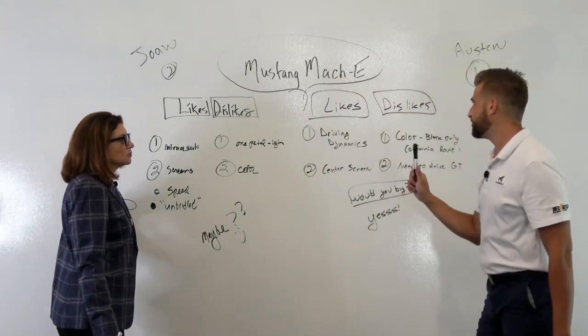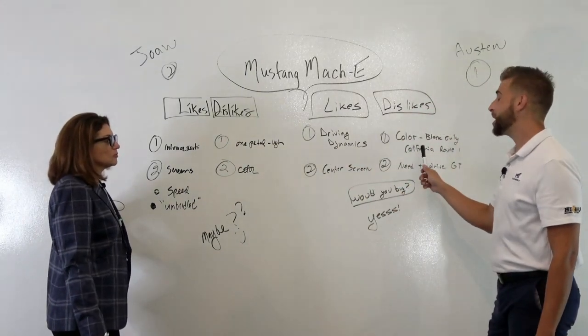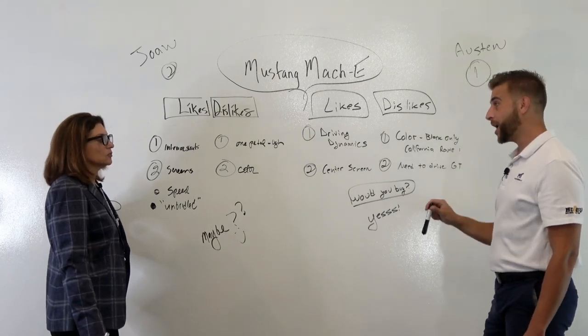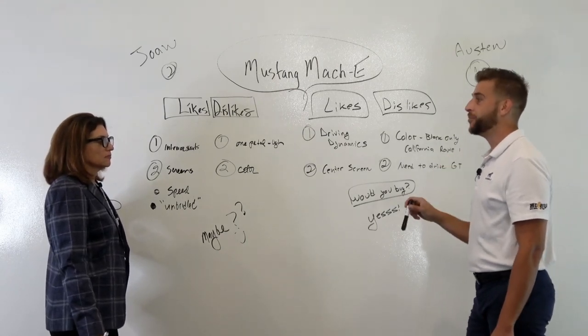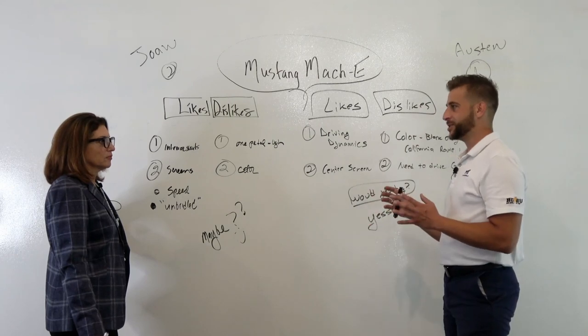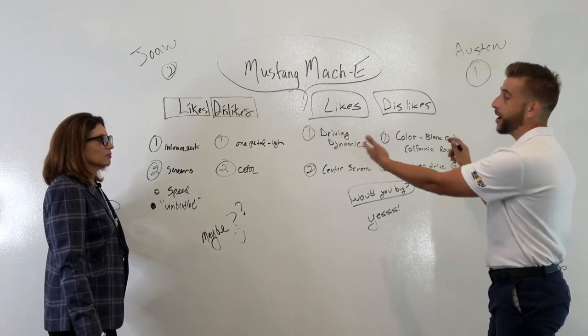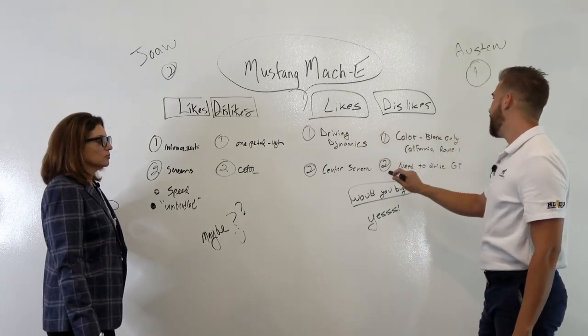My dislikes kind of actually goes off of yours because ours was the California Route One special. It was all black. And when it's the regular trim, it shows the body lines a little bit differently and kind of accentuates the styling a little bit more. So that's just a color choice.